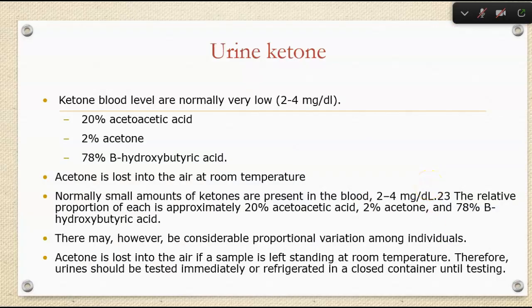Ketone levels are usually really low — 2 to 4 milligrams per deciliter — consisting of approximately 20% acetoacetic acid, 2% acetone, and 78% beta-hydroxybutyric acid. Acetone is lost in the air at room temperature. We have to test these urines immediately or refrigerate in a closed container until testing because of this volatility.